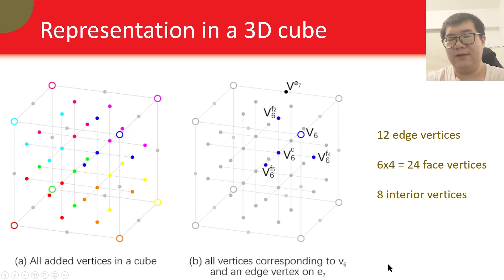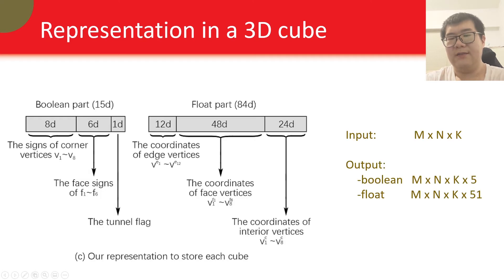And similarly, we can design the parameterization for a cube. One thing to note here is that we have a tunnel flag in the 3D case. It indicates whether there is a tunnel inside the cube, which we will show later. To summarize, in a 3D neural marching cube, the input would be n by n by k, and output would be n by n by k by 5 for the boolean part, and n by n by k by 51 for the float part.